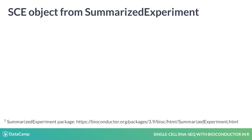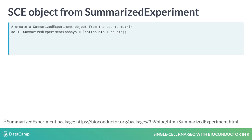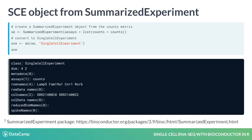The other way to create a SingleCellExperiment object is by transforming an existing SummarizedExperiment object, which is commonly used when working with bulk RNA sequencing data. If you're not familiar with this class, you can look at the package documentation. We first need to create a SummarizedExperiment object using the same count matrix as in the previous slide, and then use the as function to transform the SummarizedExperiment into the SingleCellExperiment object. You see that the new SCE object is exactly the same as the one we created in the previous slide.